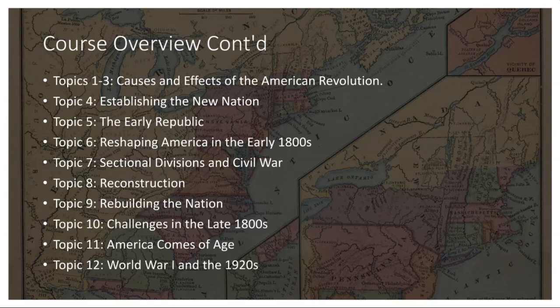Topic 4 covers reshaping America in the early 1800s. The Louisiana Purchase of 1803 from France doubled the nation's size and paved the way for westward expansion. Industrialization gained momentum, transforming the economy and society. The so-called Era of Good Feelings under President James Monroe was characterized by a sense of national unity and territorial expansion, even as debates over slavery intensified.